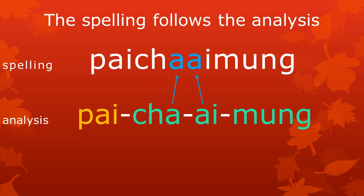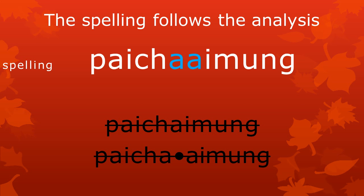The spelling follows the analysis and shows exactly what meaningful parts the word has. Therefore, there are two letters A — one from the meaningful part Cha, and the other from the meaningful part Ai. So, even though there are three different pronunciations possible, the spelling shows all the meaningful parts in their appropriate forms.